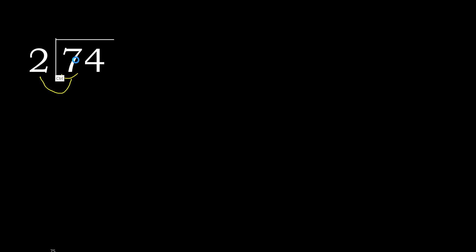74 divided by 2. Starting with 7: 2 multiplied by which number is nearest to 7 but not greater? 2 multiplied by 4 is 8, which is greater. 2 multiplied by 3 is 6 — it is not greater. 7 minus 6 is 1.